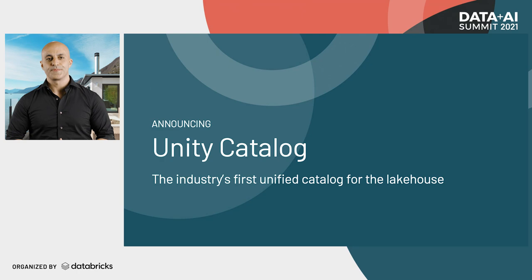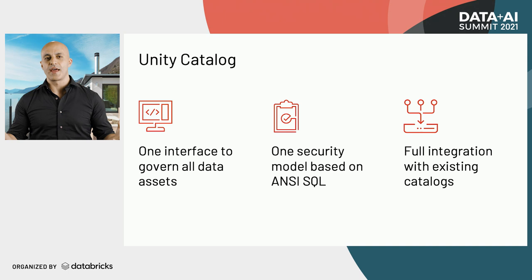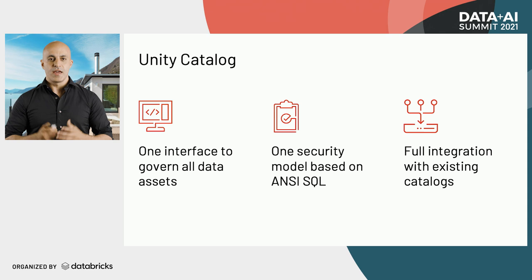The Unity Catalog provides one interface to govern virtually all data assets. It allows organizations to standardize on one fine-grained solution so that they can have one security model based on ANSI SQL for data lakes across all clouds. The best part is that you can federate it so it works with existing catalogs, so there is no need for heavy migration. I'm really excited to welcome back Matej to tell us more about the Unity Catalog.